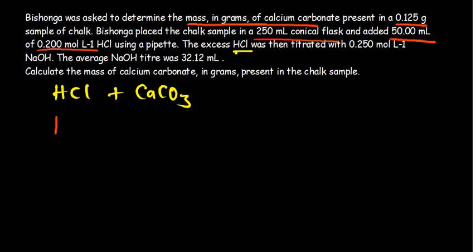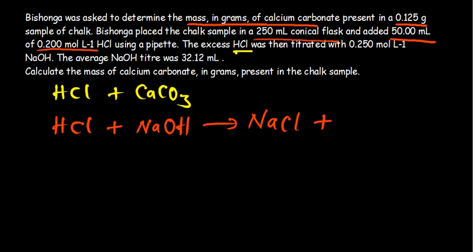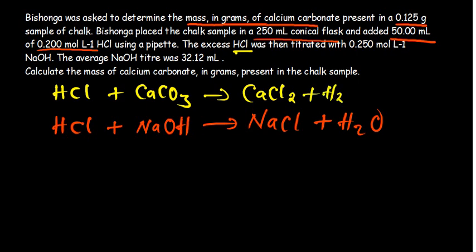The excess hydrochloric acid was then titrated — that is our second reaction. The excess HCl was titrated against sodium hydroxide. The products of that reaction are: HCl reacting with sodium hydroxide to give sodium chloride plus water. For the reaction between HCl and calcium carbonate, the products are calcium chloride plus water plus carbon dioxide.